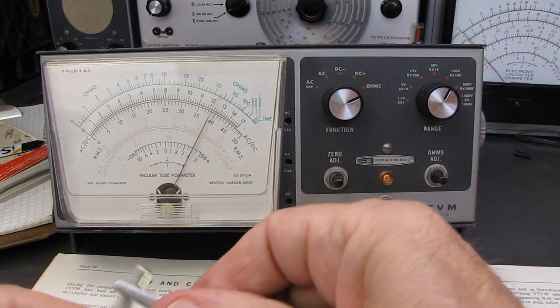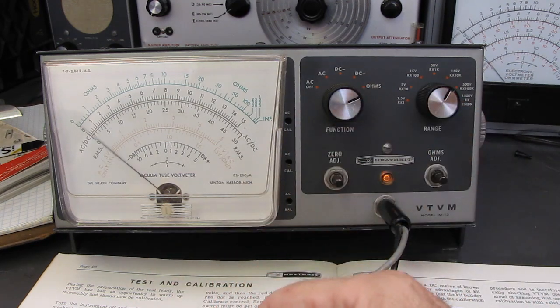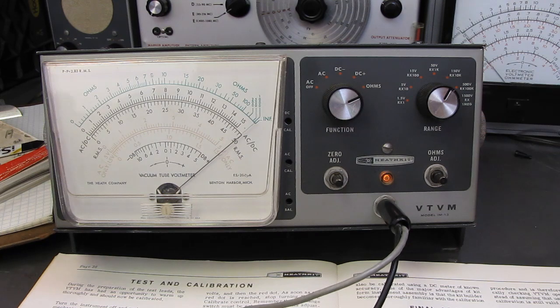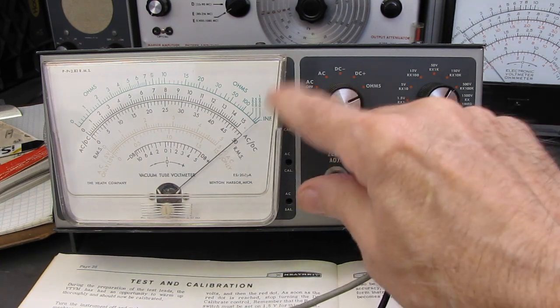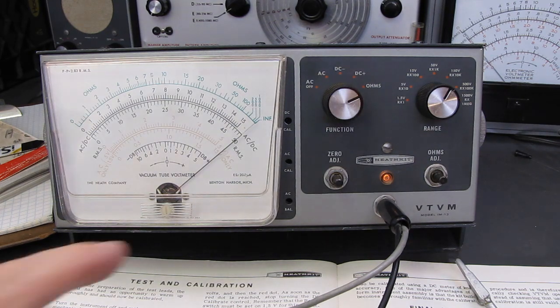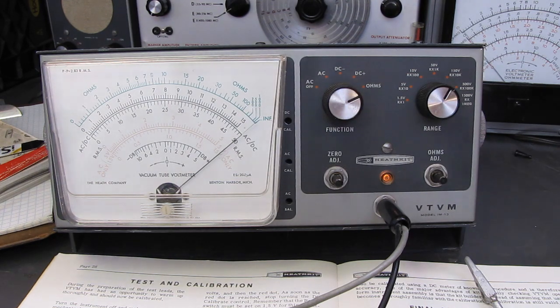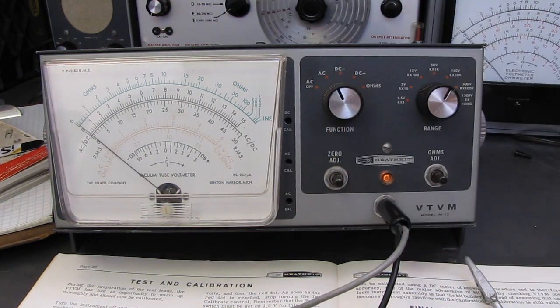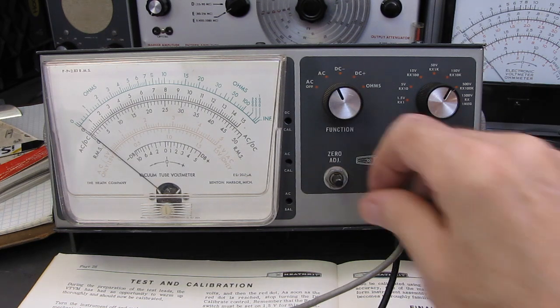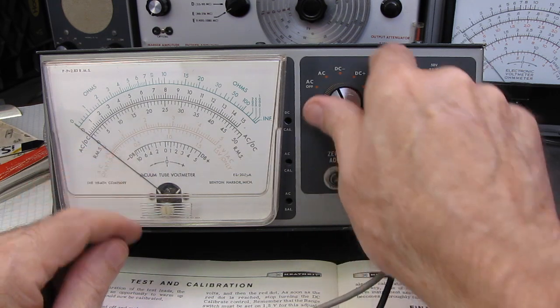I am on AC ohms. And the ohms adjust. And the check for that is to check both ends of the range. And make sure it'll zero and go up to infinity. Everything else is set by the resistors inside the meter. So as long as the resistors are in cal, haven't been burned up or in tolerance, the meter is good.